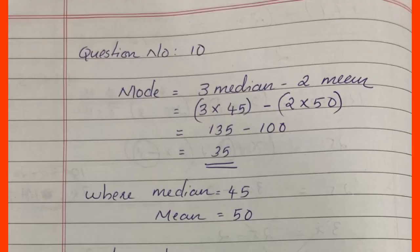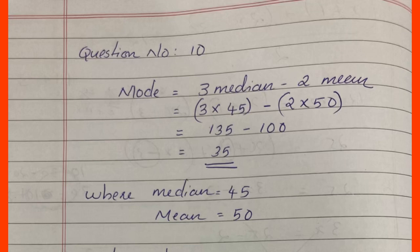We can calculate the mode using the equation: Mode = 3 Median − 2 Mean. Using median = 45 and mean = 50, we apply the formula: Mode = 3(45) − 2(50) = 135 − 100 = 35. The median, mean, and mode values are now found.